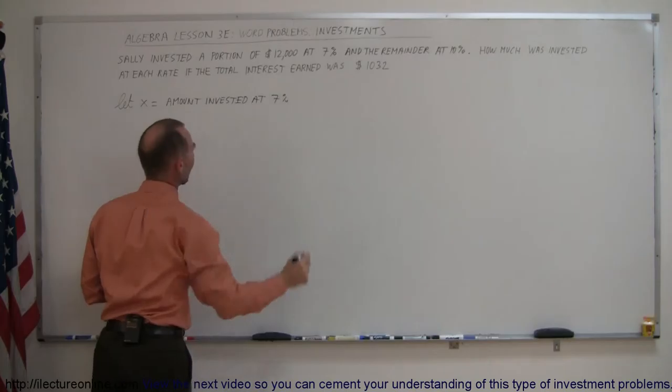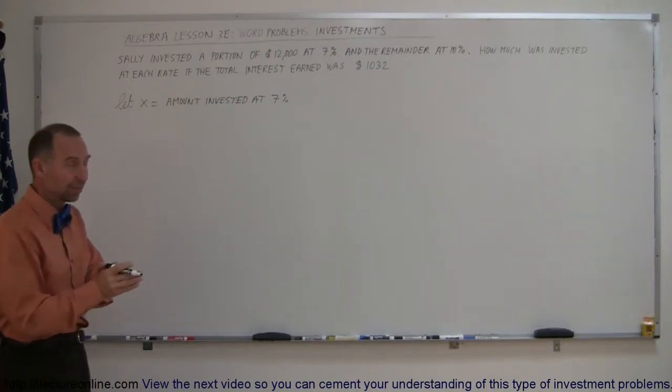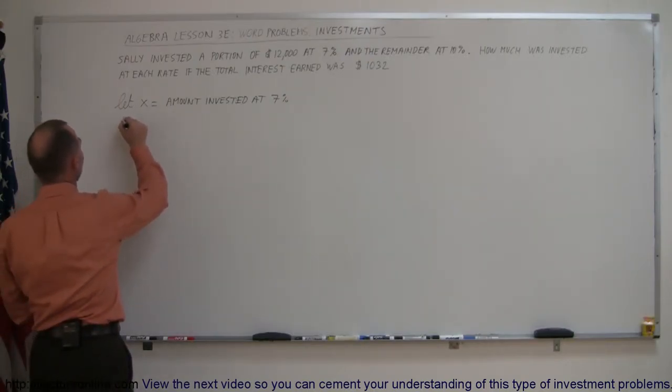Now it doesn't have to be 7% - we could have said 10%, makes no difference. But if we let x equal the amount invested at 7%, then the remainder can be found by